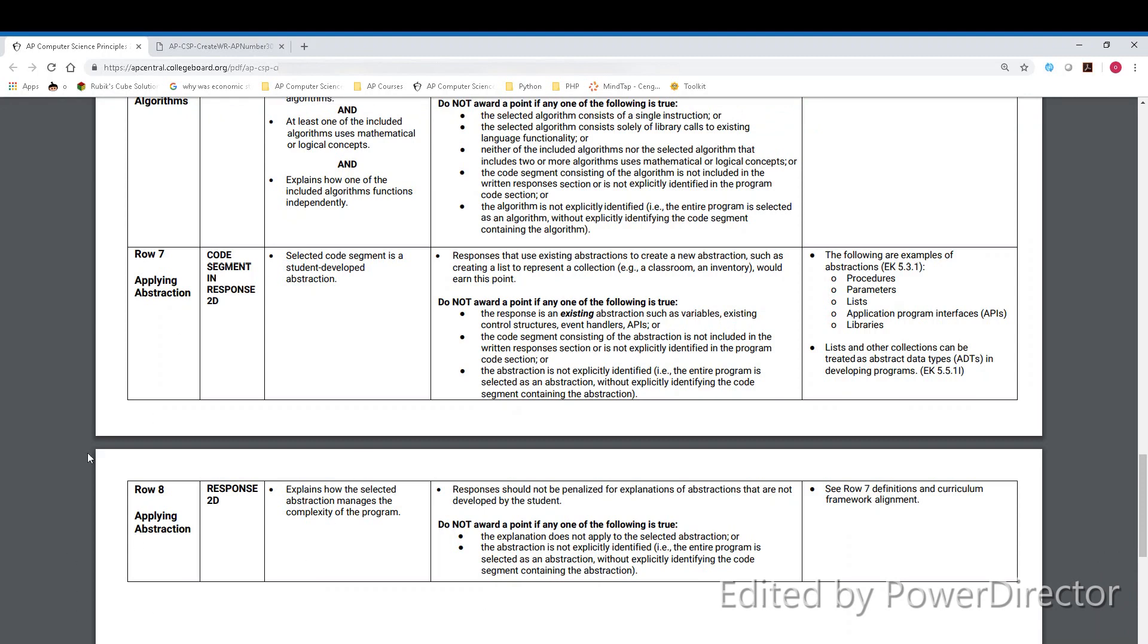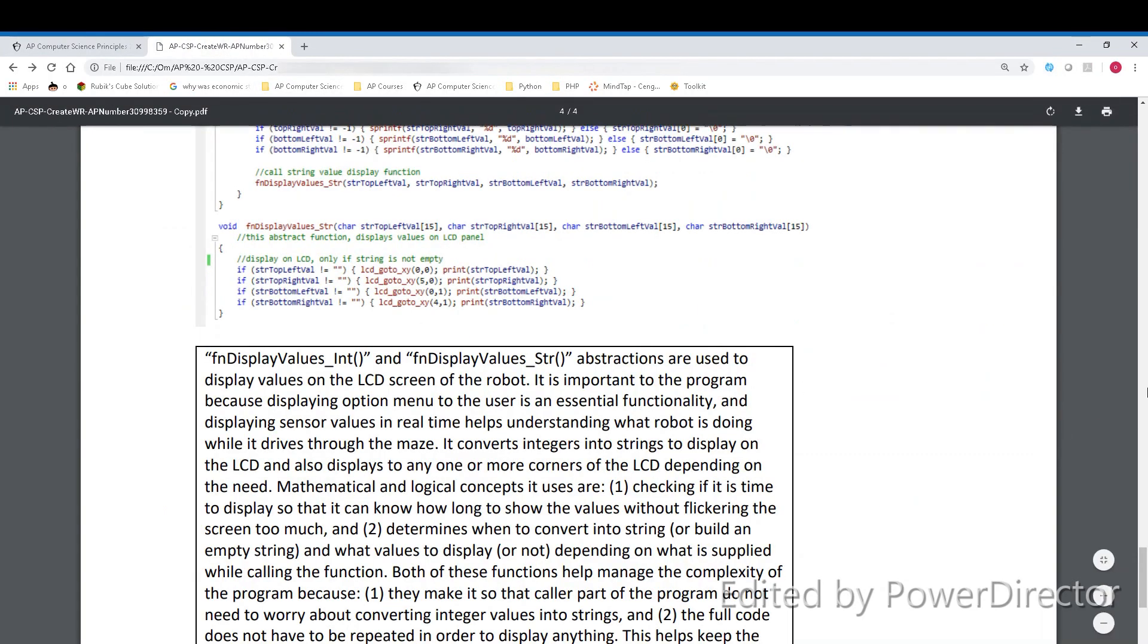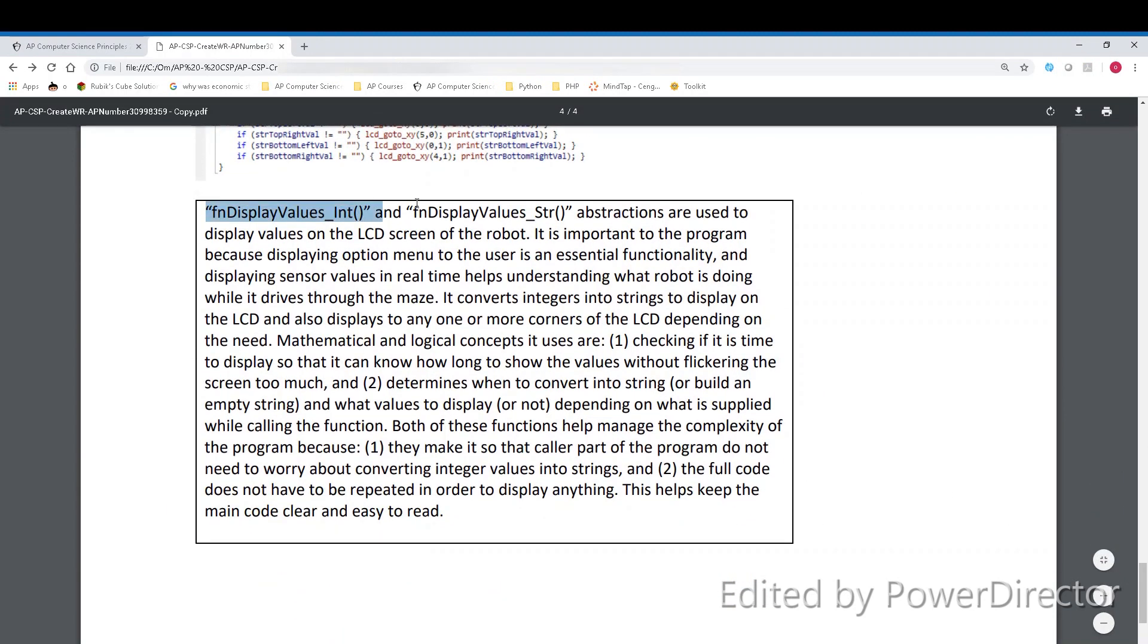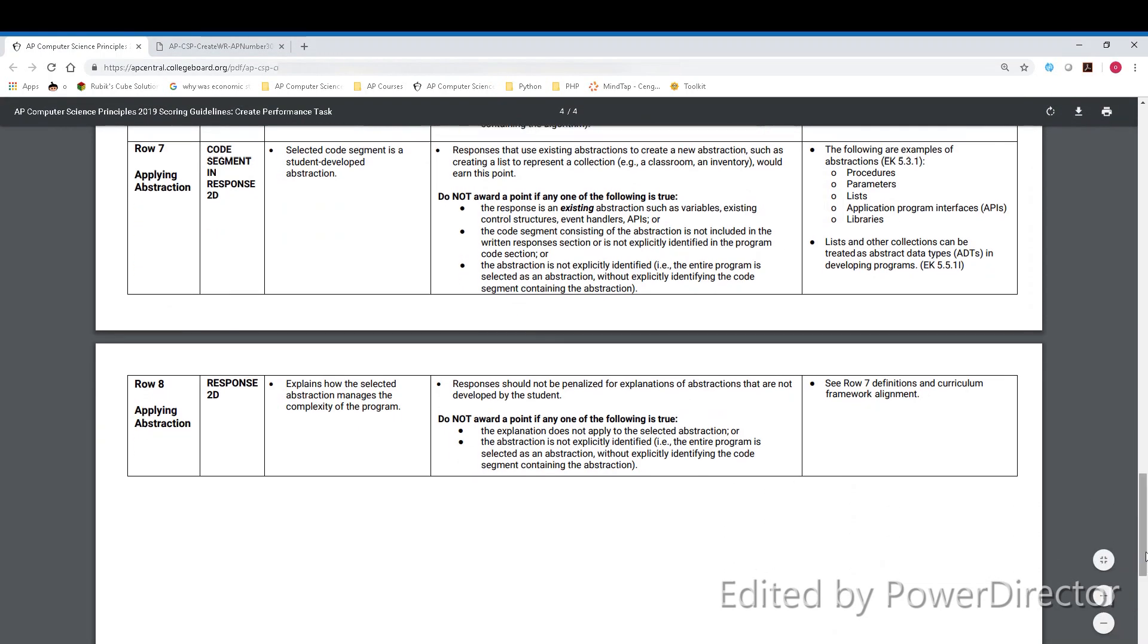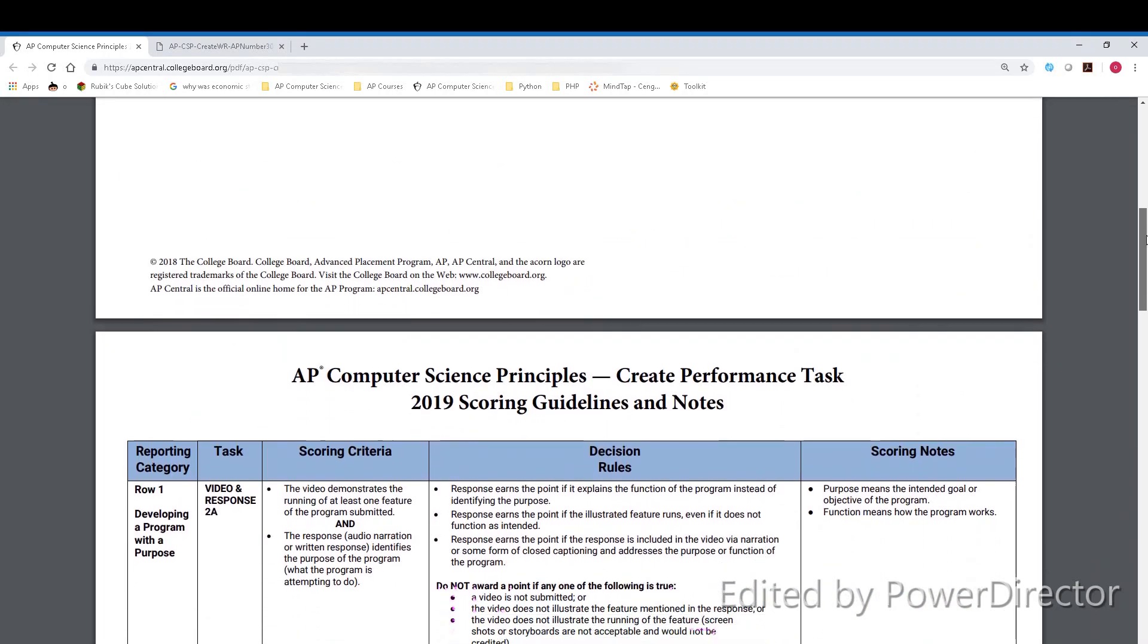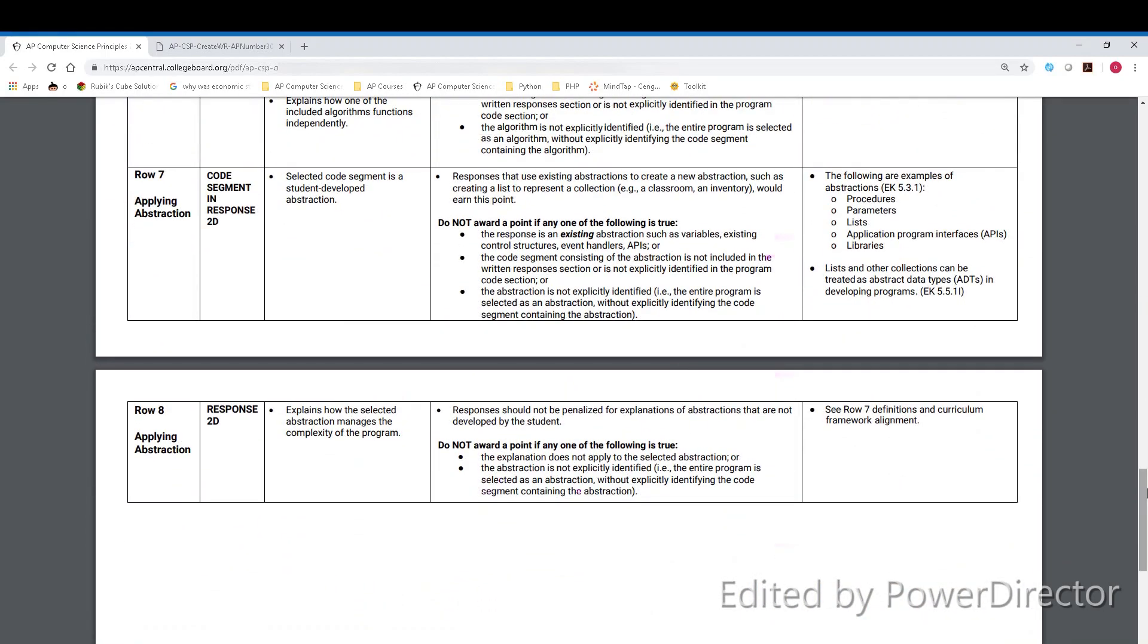Row 8 is for the actual response, and this means that a response would explain how the abstraction manages complexity. How I note it here is that I note what the abstraction does, and I also note how it helps manage the complexity here, and give two reasons why it manages the complexity. This is a lot like the explore task, so you just have to make sure that your program and your responses fulfill all of these criteria, and if they do, it should be fairly easy to get a full score in this task.